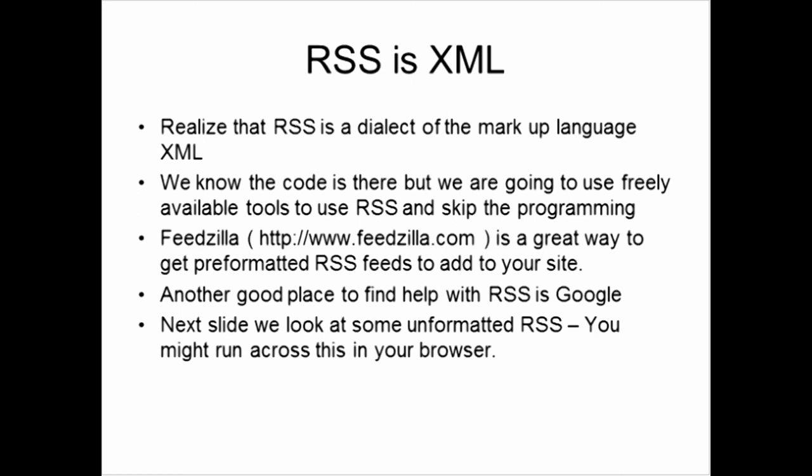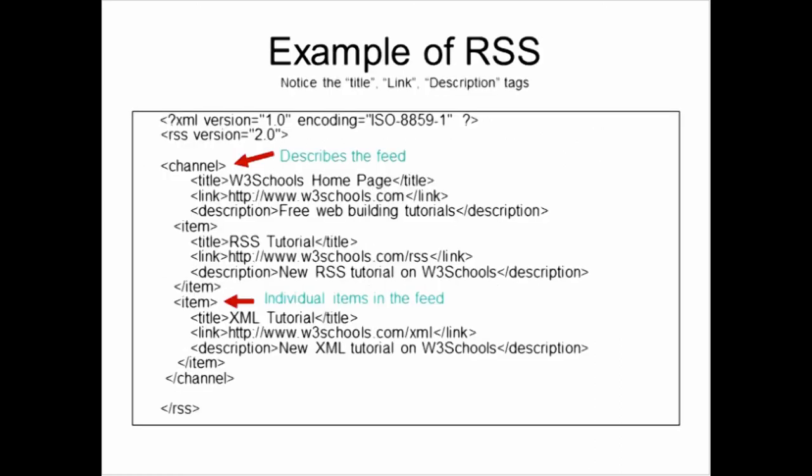Now we're going to look at some unformatted RSS — you might run across this in your browser if you're trying to find an RSS feed, so I'm going to show it to you right now. This is all tag markup language. Notice in my first line I have an XML statement — sometimes you won't see that but it's recommended to have it. The second line you can see it's RSS — you get that markup RSS version equals 2.0 and then close the tag. That starts my RSS. With my two red arrows I've got a channel tag that describes the feed, and then I have an item tag — the item is the individual item in the feed.